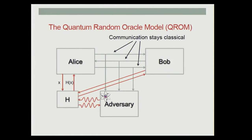The picture we have looks like this. We have Alice and Bob engaged in some protocol. Since Alice and Bob are still classical, they are only communicating classically. We also have an adversary who's allowed to be quantum, and the adversary is maybe eavesdropping on the communication between Alice and Bob, maybe actually interacting with them, but this interaction is still classical.